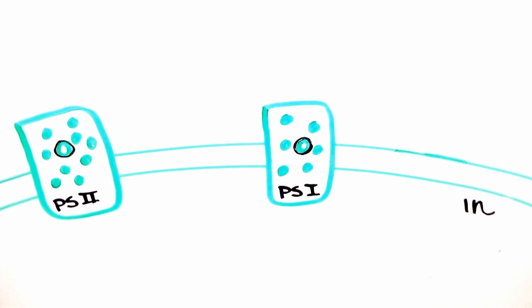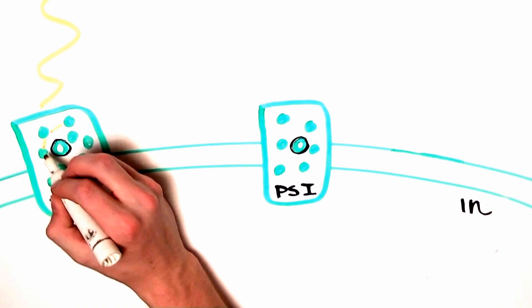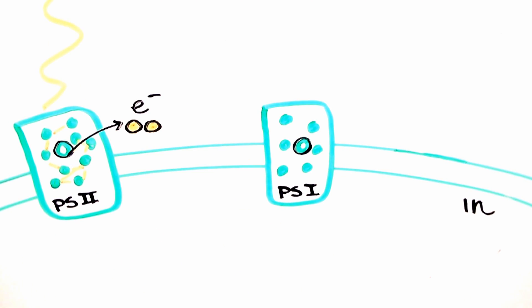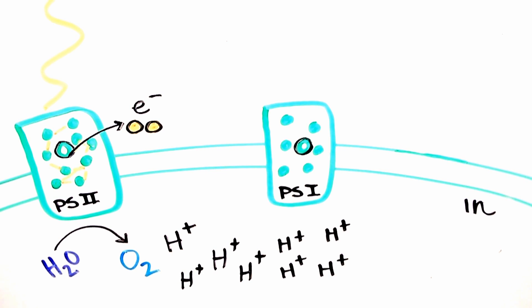Let's start with photosystem II, which uses light to excite a pair of electrons that are passed on to an electron transport chain. Water molecules are split into free hydrogen ions and oxygen, effectively replacing those electrons, continuing the cycle and creating the essential proton gradient or proton motive force across the membrane of the thylakoid.